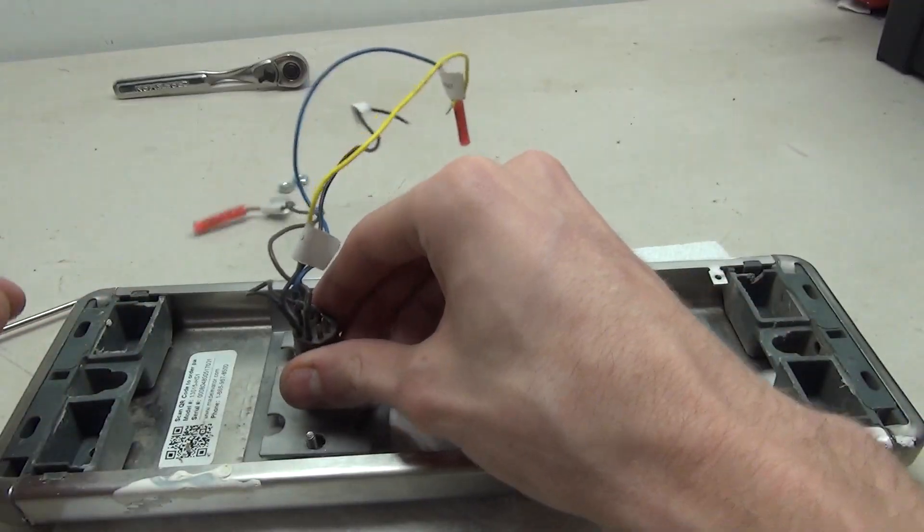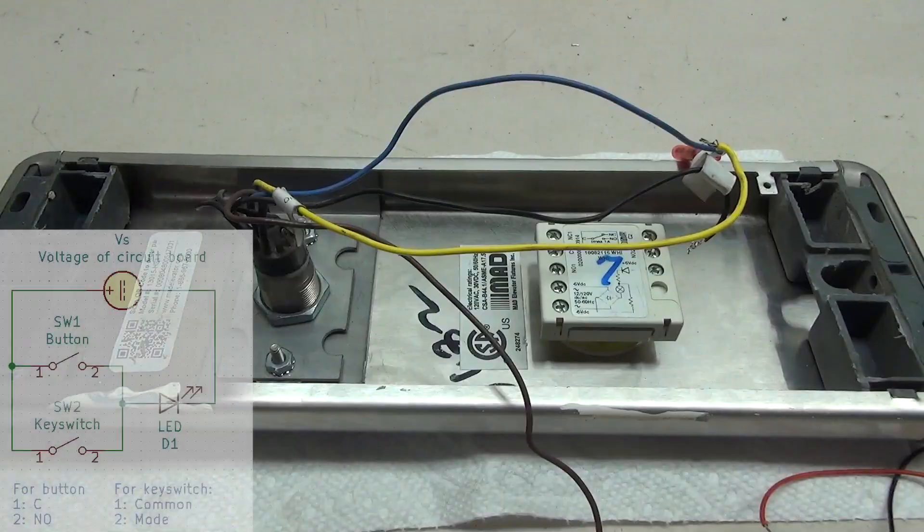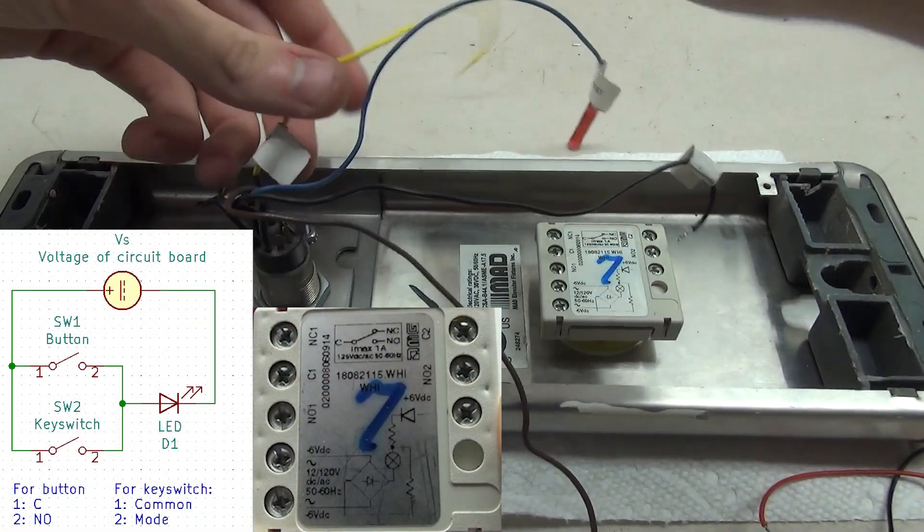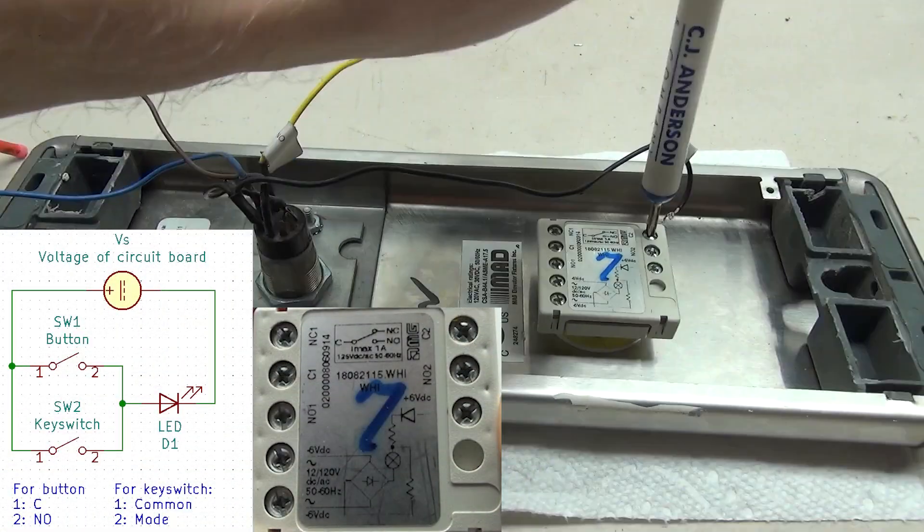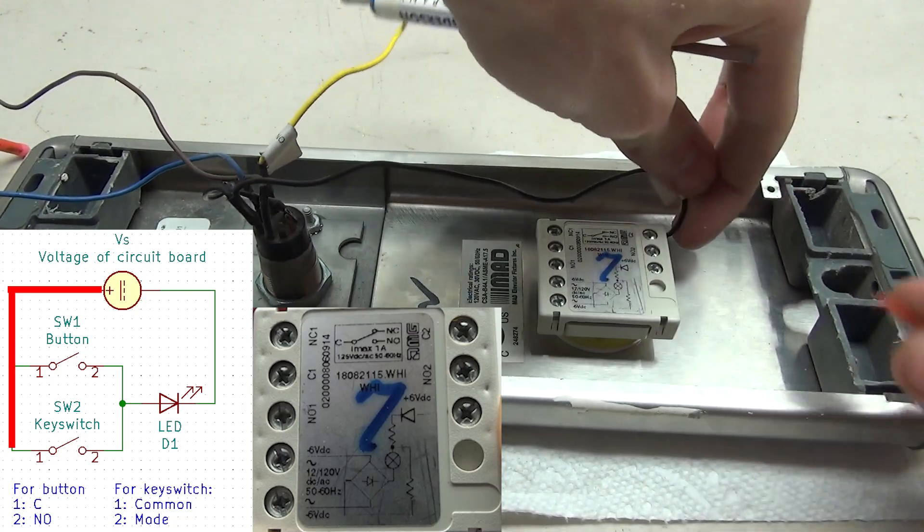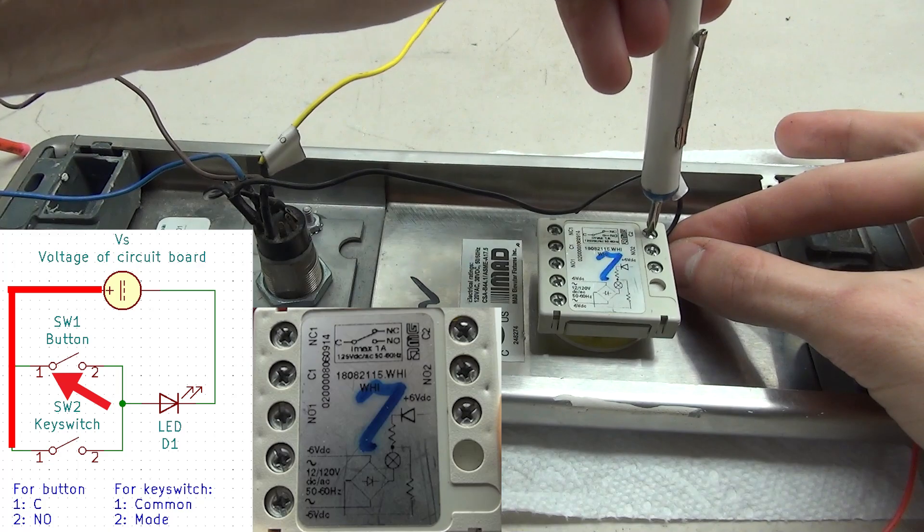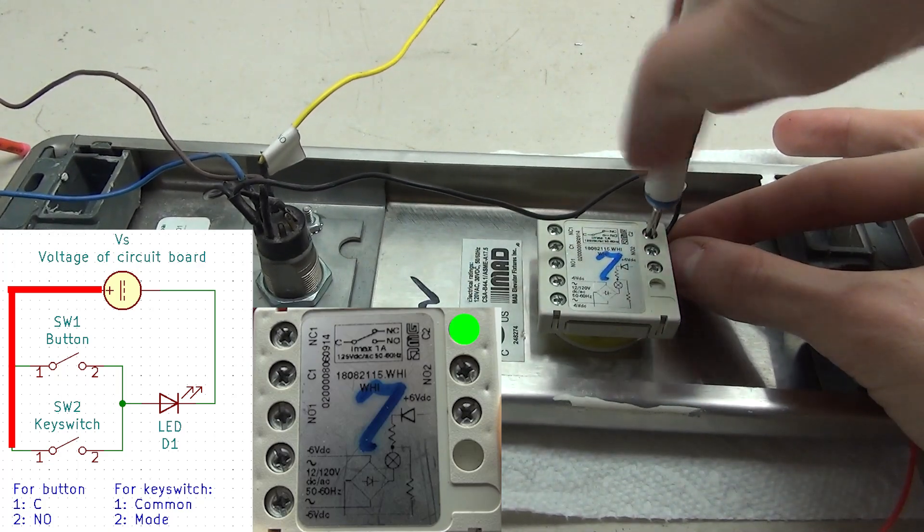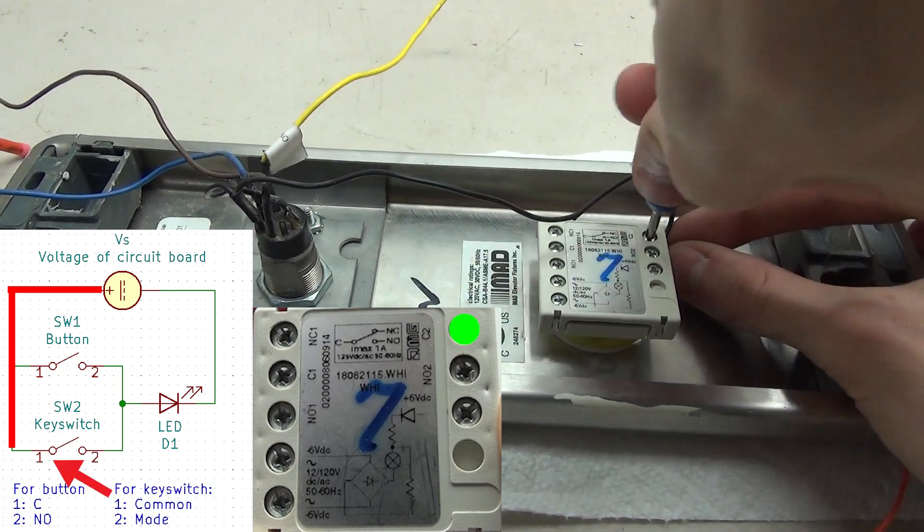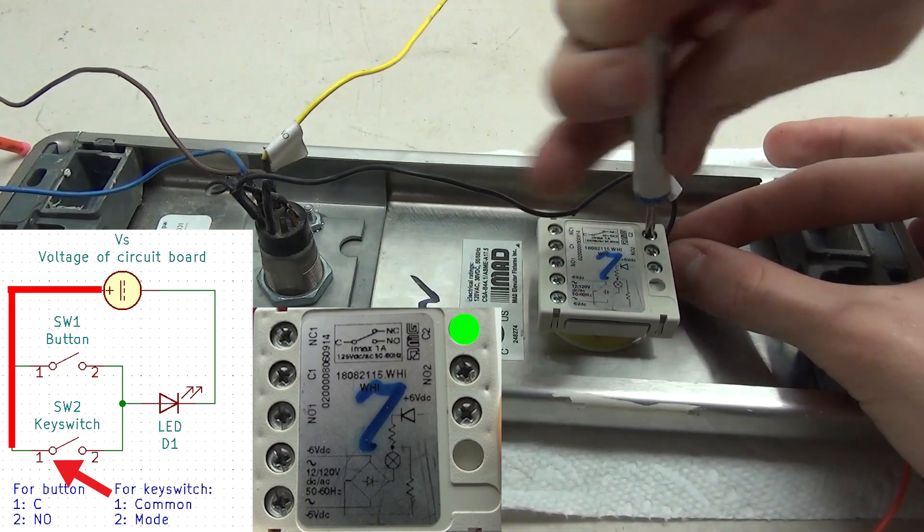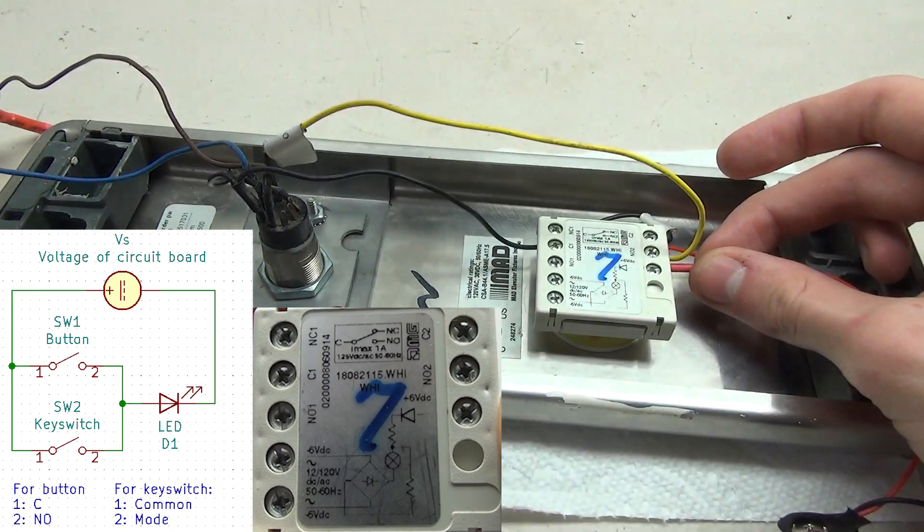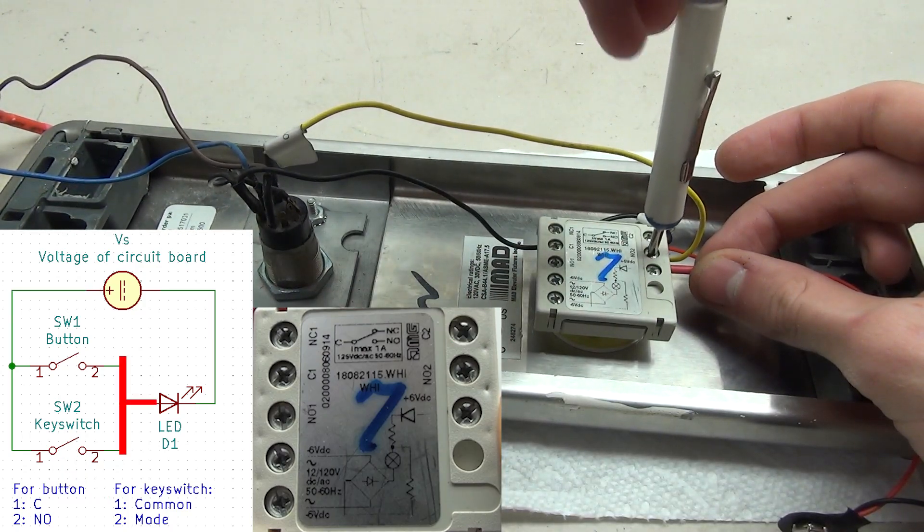So this circuit diagram shows what I'm going to be doing for this project. First, I'm connecting the positive of my battery to pin one on the switch—in this case, the C pin on the button—and I'm also connecting the common of the key switch in there as well. So that forms the left connection. Next, I connected the other end of both switches to the positive of the LED.